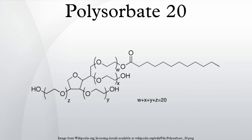Polysorbate 20 is a polysorbate surfactant whose stability and relative non-toxicity allows it to be used as a detergent and emulsifier in a number of domestic, scientific, and pharmacological applications. It is a polyoxyethylene derivative of sorbitan monolaurate, and is distinguished from the other members in the polysorbate range by the length of the polyoxyethylene chain and the fatty acid ester moiety.